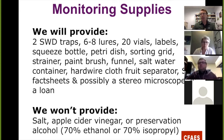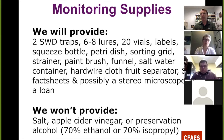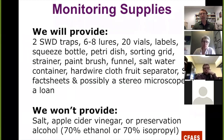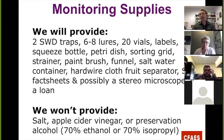In terms of the actual monitoring supplies, these are the things we supply to you: two traps, six to eight lures, some vials and labels, a squeeze bottle, petri dish, sorting grid, paintbrush, funnel, saltwater container, a separator for the fruit that goes in the container, and fact sheets. A few of you will need to borrow stereo microscopes for the identification, and I think we'll be able to loan those out for the season.